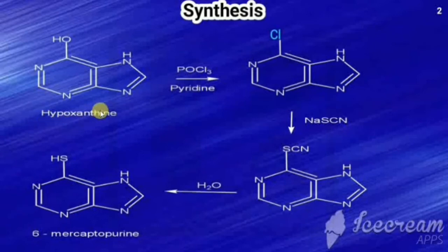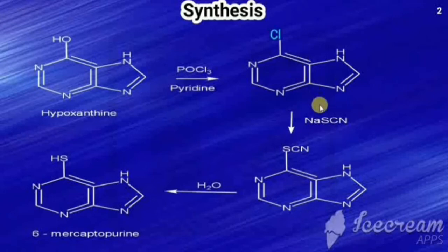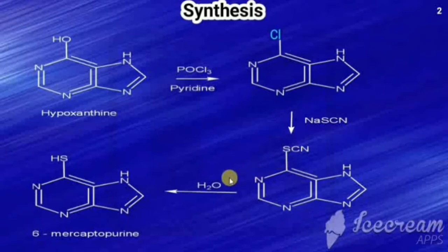So that product is called 6-mercaptopurine. In summary: hypoxanthine (6-hydroxypurine) is treated with POCl3 and pyridine to give the chloro derivative, which on treatment with NaSCN gives the SCN derivative, and on hydrolysis gives 6-mercaptopurine.